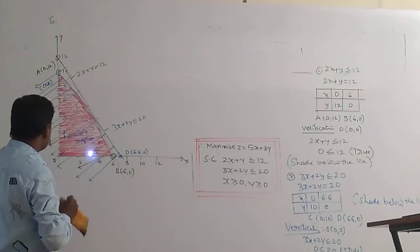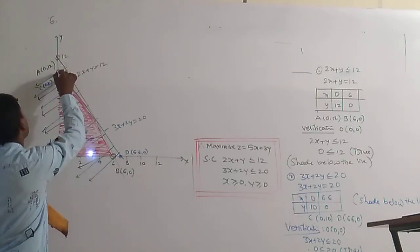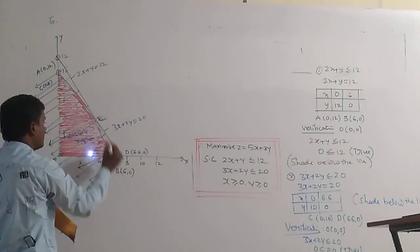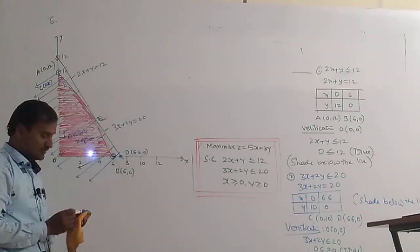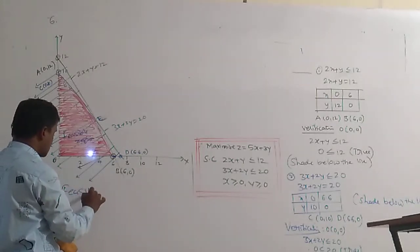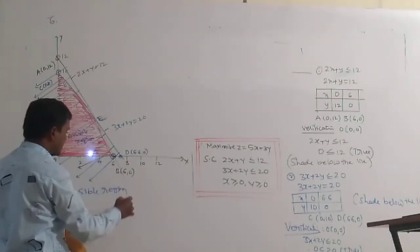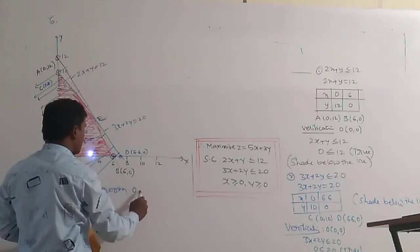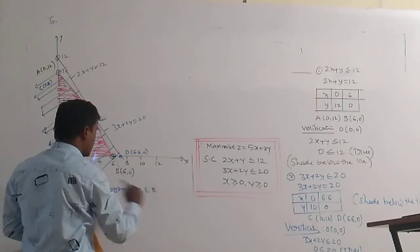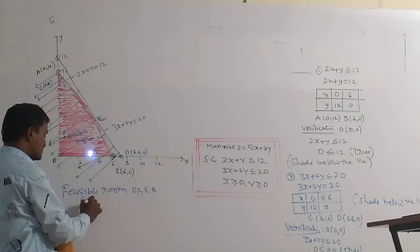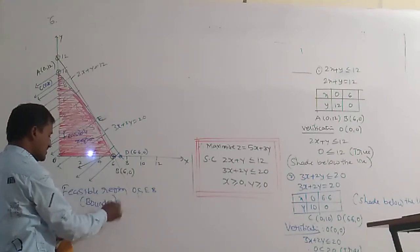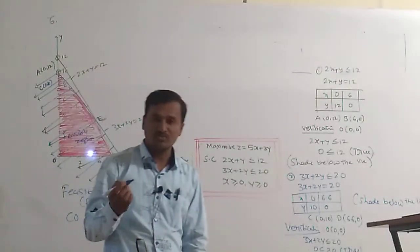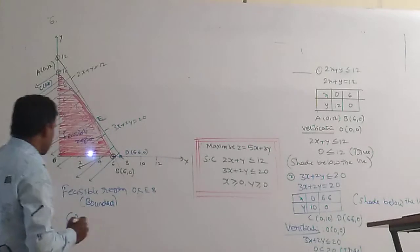The feasible region is O, C, E, and B — this is a bounded region. We already know that when the feasible region is bounded, the solution always exists at a corner point. The corner points are O(0,0), C(0,10), E (to be found), and B(6,0).